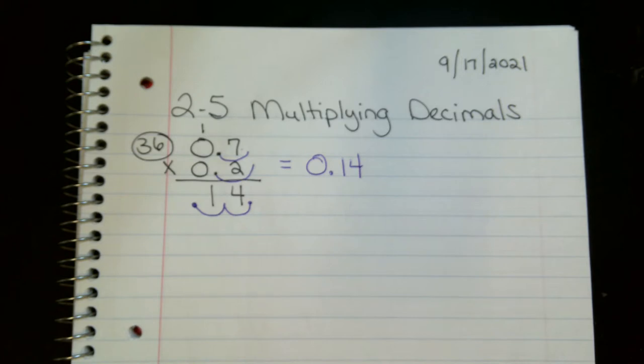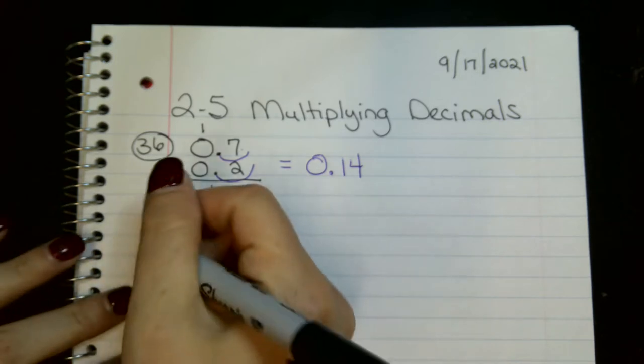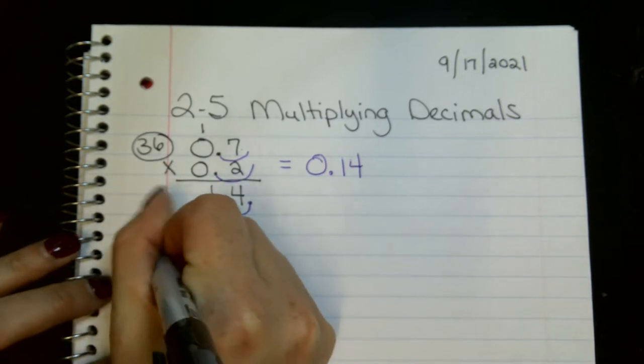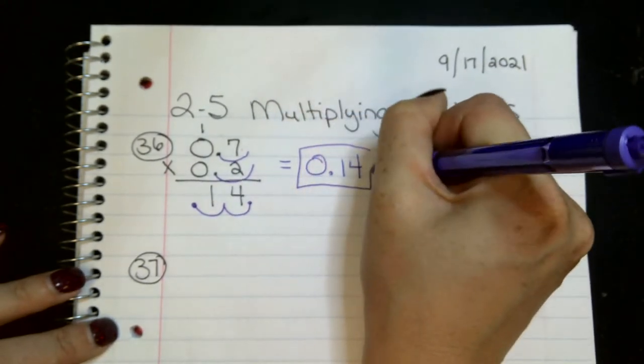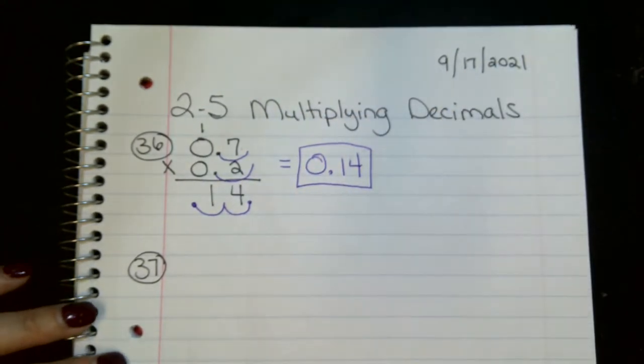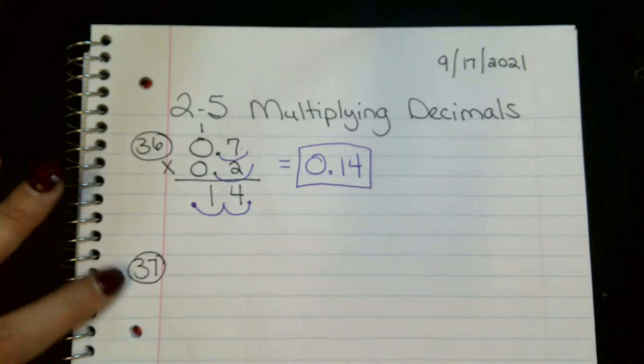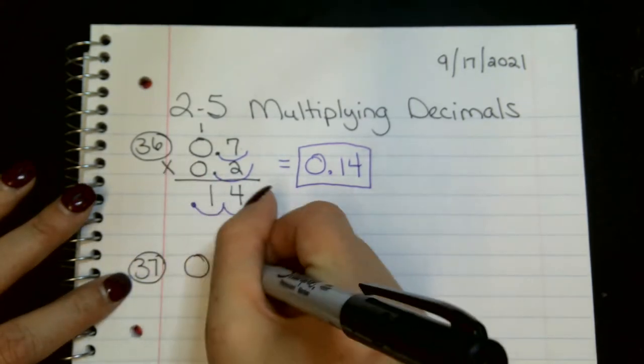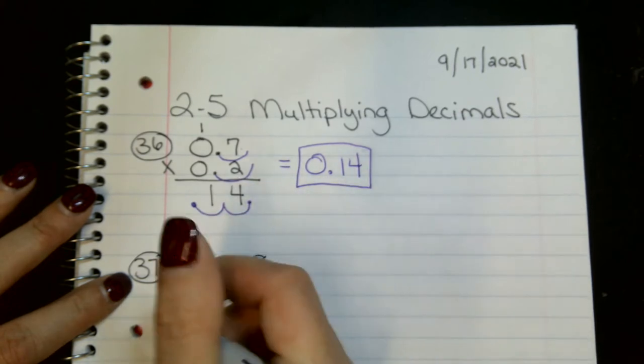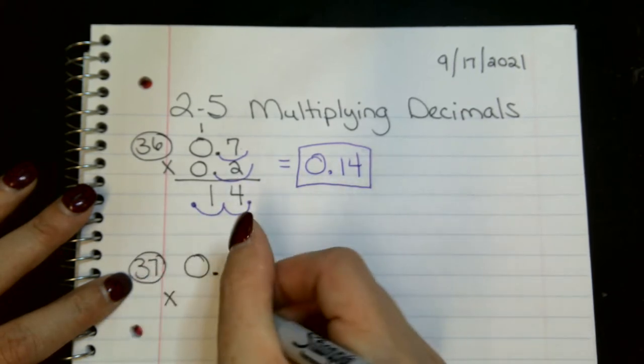So, you're doing essentially the same thing you did in the last time of multiplying decimals. It's just this time you have a decimal times a decimal. All right, 37. And guys, it might be important if you box your answers. Make sure and you circle the question number.